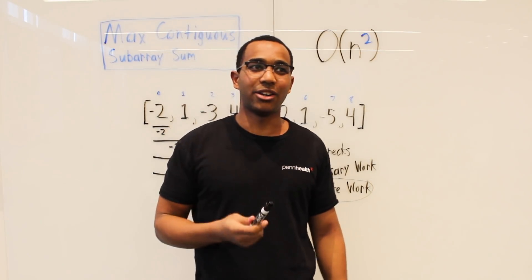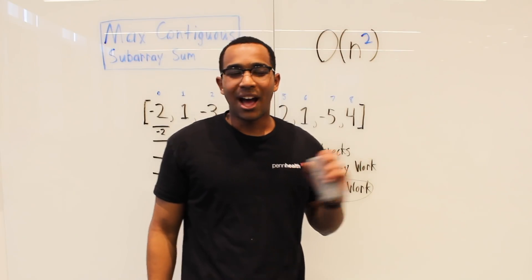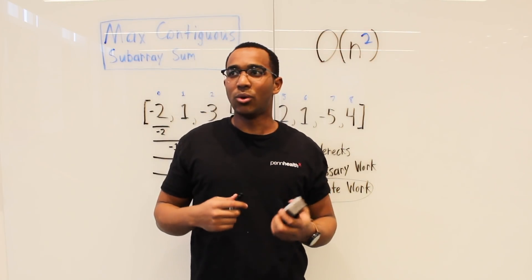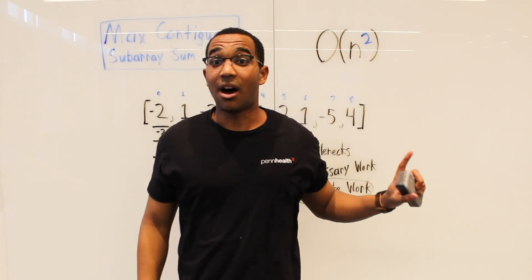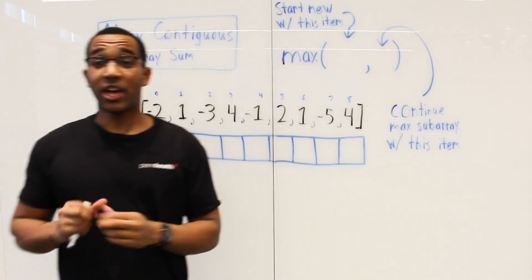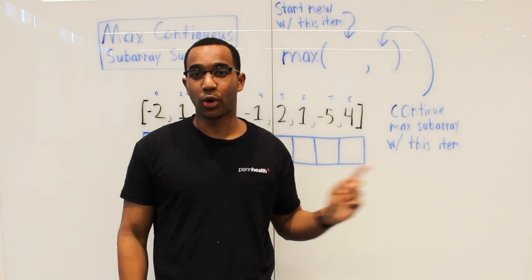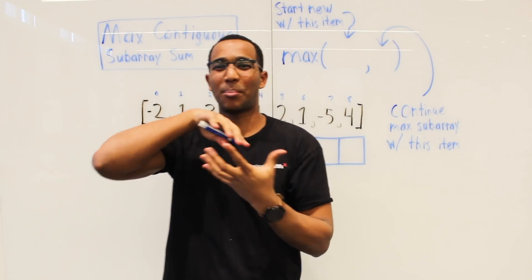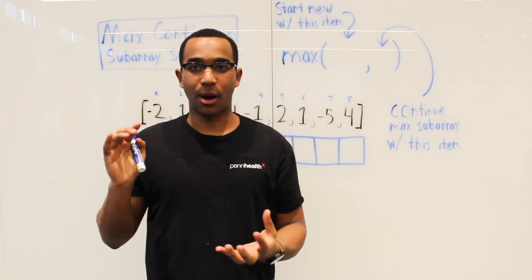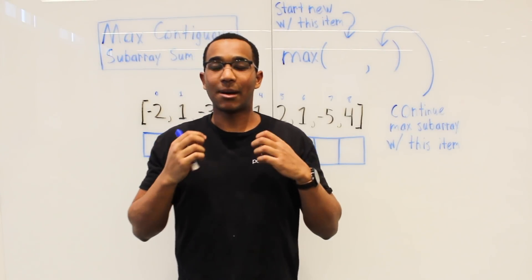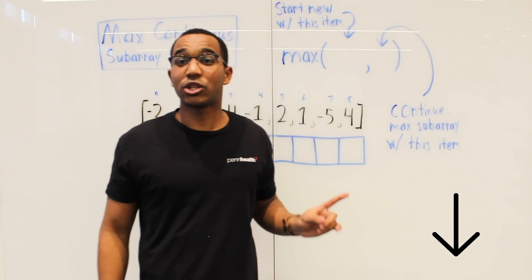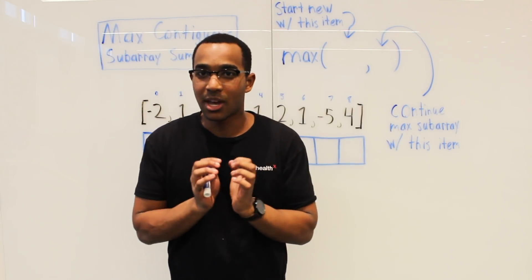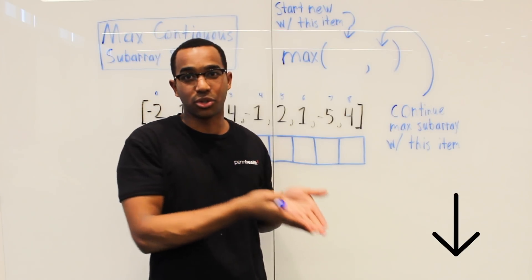How do we turn this into a linear time algorithm? Whenever I see an array problem, I always try to think of ways to solve it in linear time. We need to reshift our thinking to dynamic programming and subproblems. There is a code sample in the description that runs in linear time and constant space. Here we're going to use linear space so we can see the subproblems clearly.